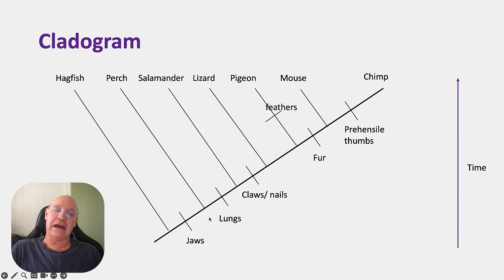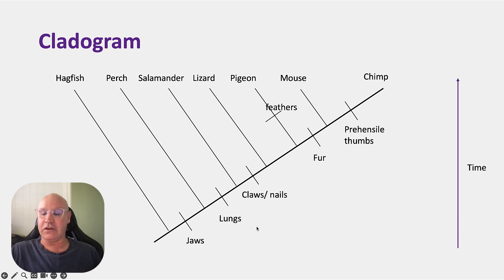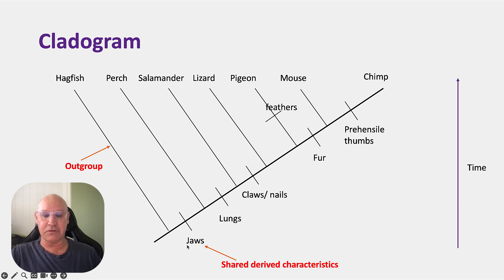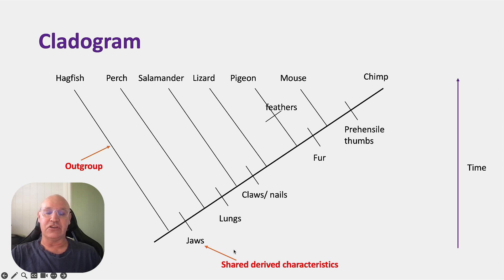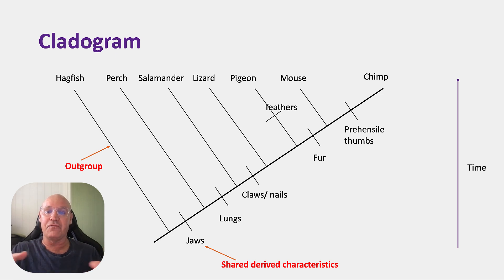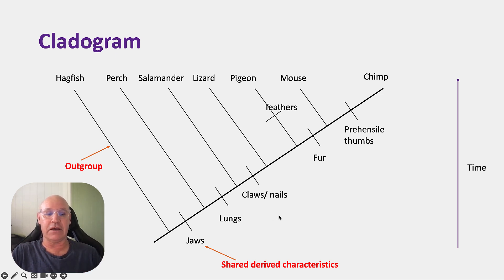These notches on the diagram are our shared derived characteristics — they're shared by all of the organisms that come after them. The outgroup is the species that don't have any of these shared characteristics. The characteristics are 'derived' because they've evolved over time, and cladograms organize species based on these shared derived characteristics.